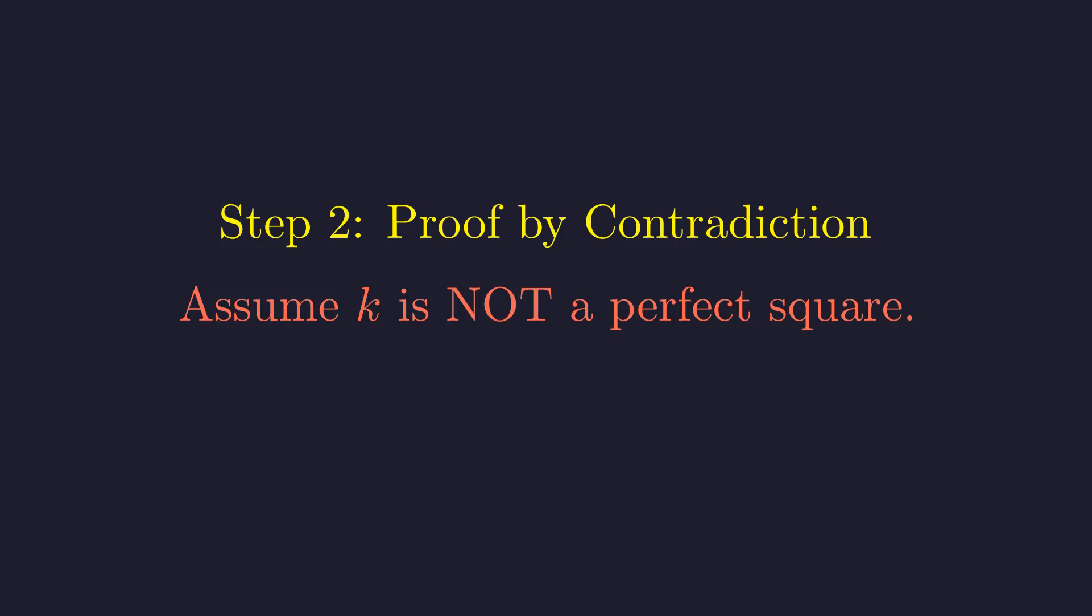To prove k is a perfect square, we'll use proof by contradiction. We assume k is not a perfect square and show this leads to an impossibility. Here's our central assumption: k is not a perfect square. We'll work with this fixed value of k and the given c.